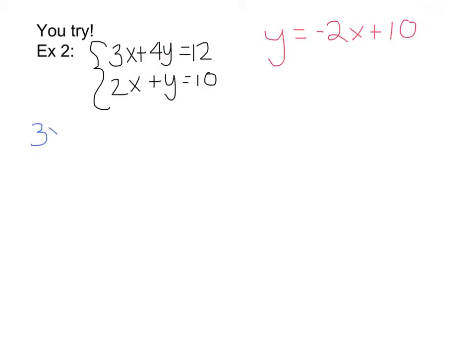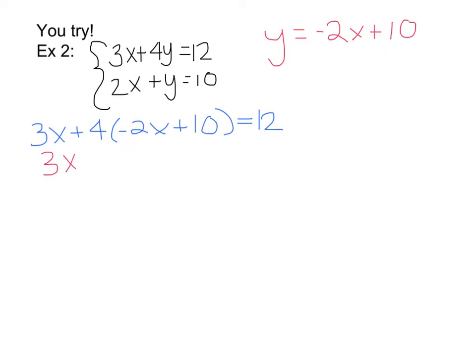That gives me 3x plus 4 times (negative 2x plus 10) equals 12. Check that your variables are the same — they are, only x's. Start by distributing the 4: 4 times negative 2x gives negative 8x, and 4 times 10 gives 40, so the equation becomes 3x minus 8x plus 40 equals 12. Combining like terms: negative 5x plus 40 equals 12.